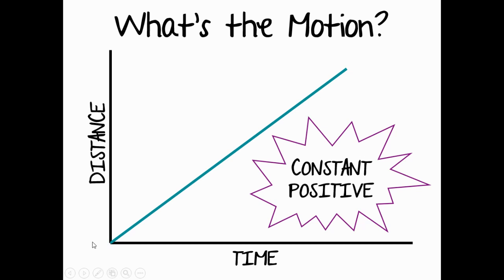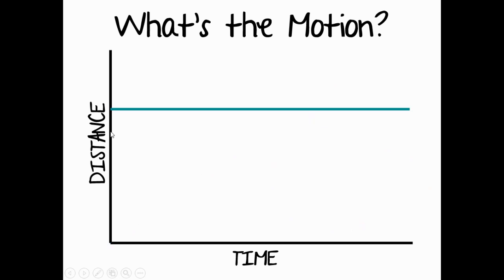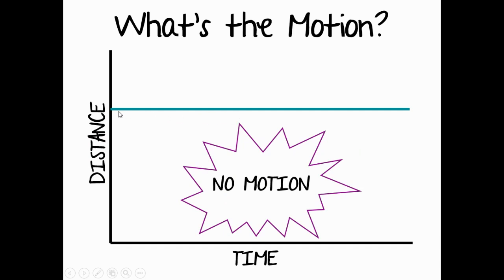This type of line is a flat line, and this line is called a no motion line. On your x-axis, time is increasing to the right — seconds or minutes are passing — however your object is at the same distance during all that time. So because time is increasing but your distance isn't changing, this object is not moving; this object is at rest.